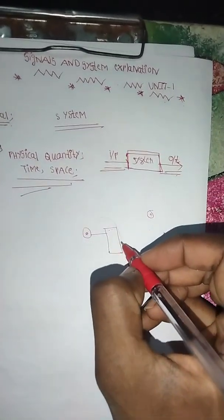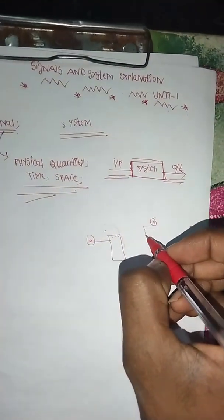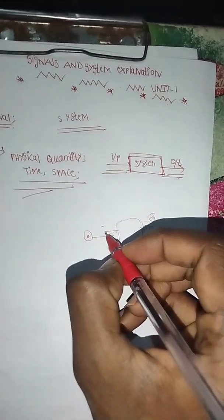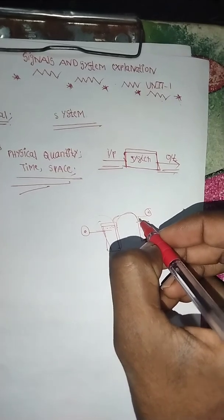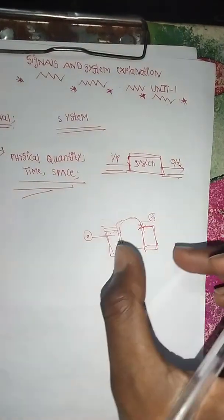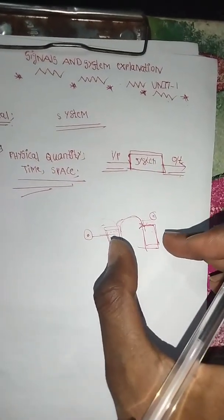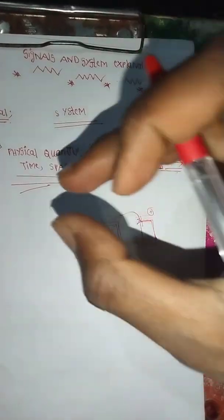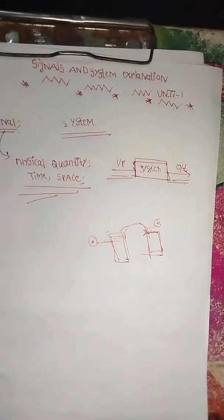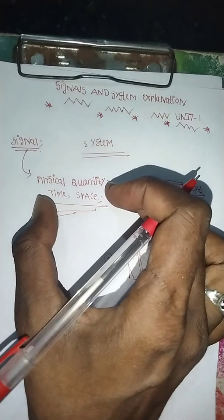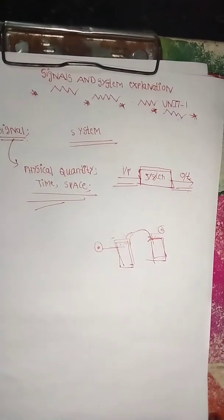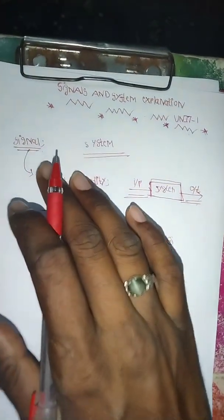The call then reached a receiver through the telephone tower. So the system takes an input, processes it through particular functional blocks, and produces an output. The signal is a physical quantity which depends on time, space, and other independent variables.